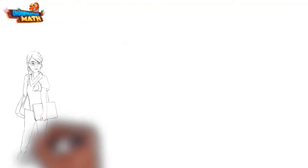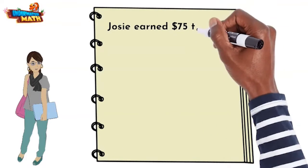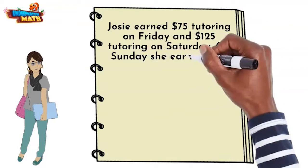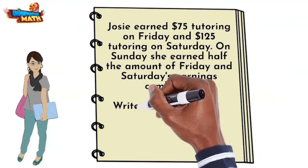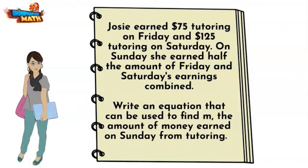Let's do this. Josie earned $75 tutoring on Friday and $125 tutoring on Saturday. On Sunday she earned half the amount of Friday and Saturday's earnings combined. Write an equation that can be used to find m, the amount of money earned on Sunday from tutoring.